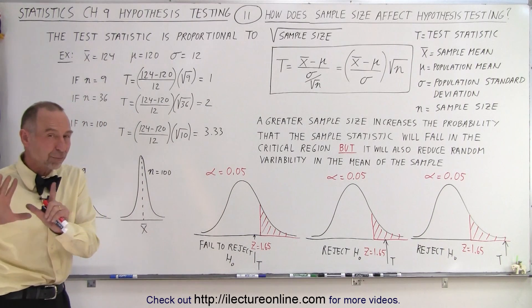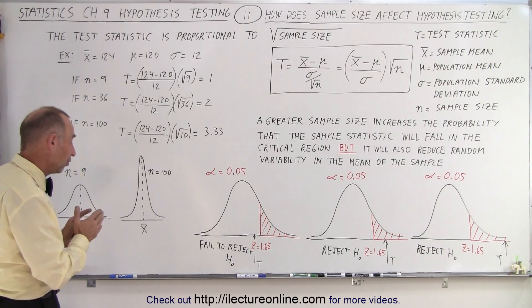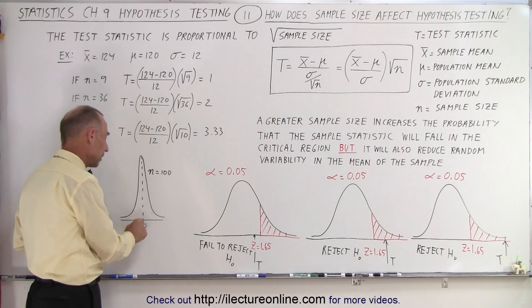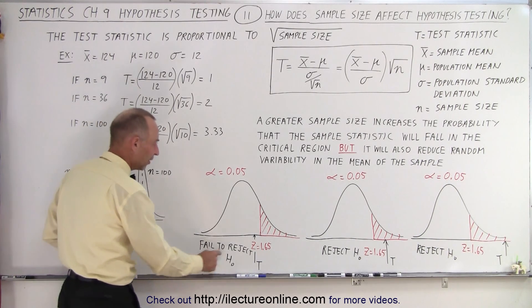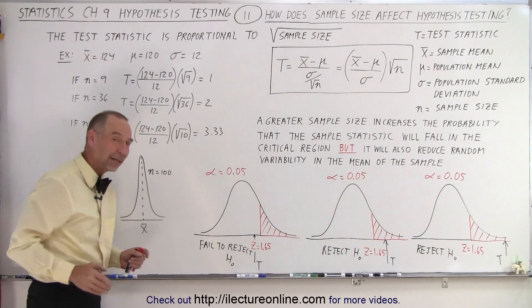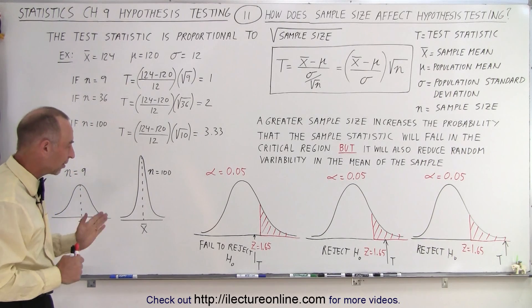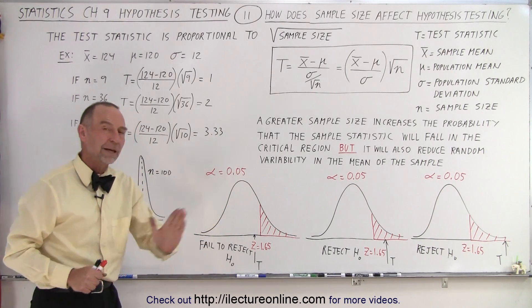So if you're going to reject the null hypothesis, it will be because this value is very different from the mean of the population, which is based on the null hypothesis, and therefore you're more likely to make the right decision.